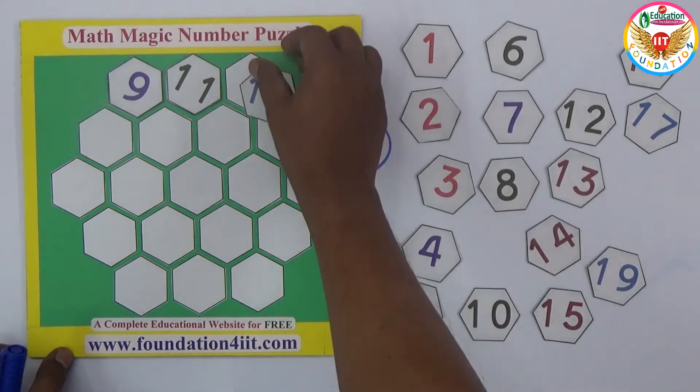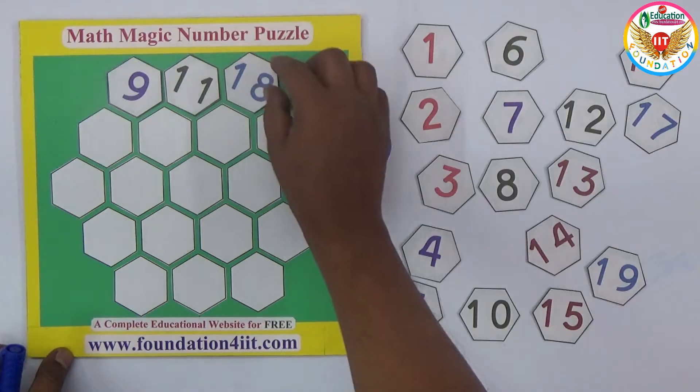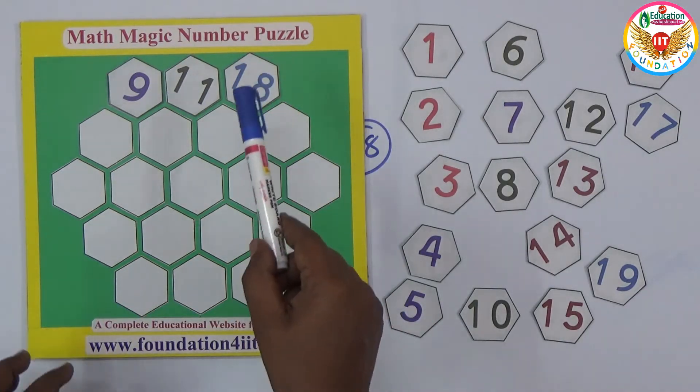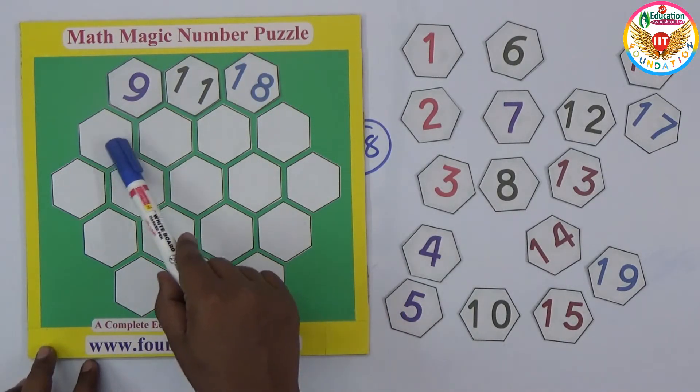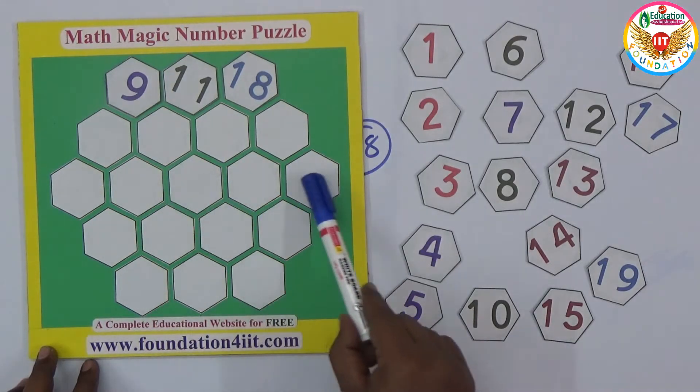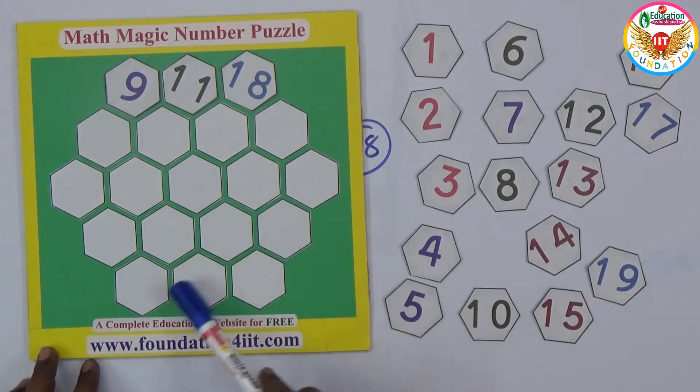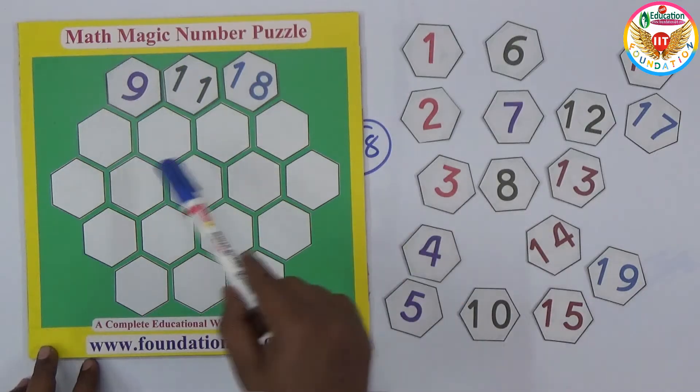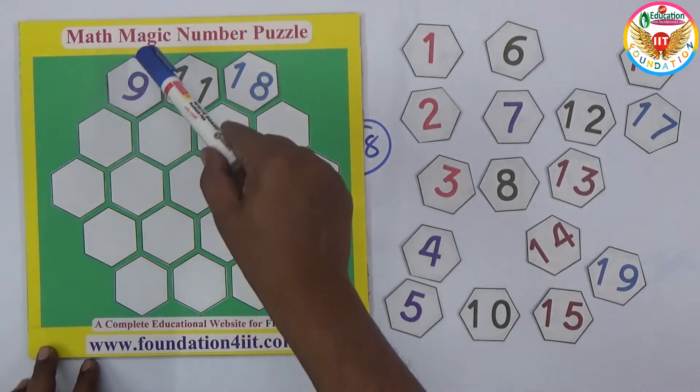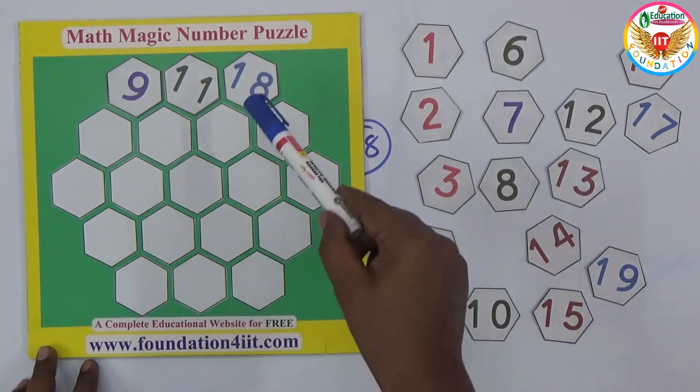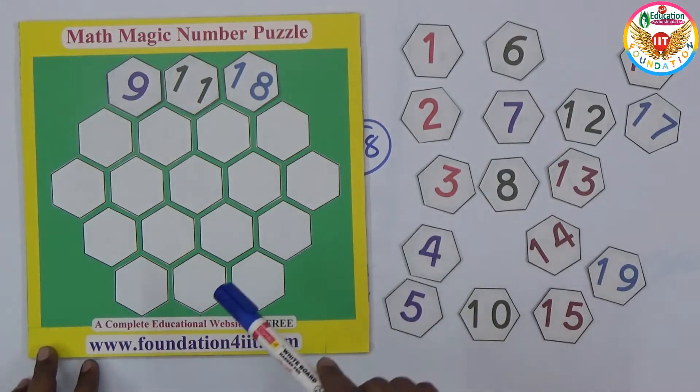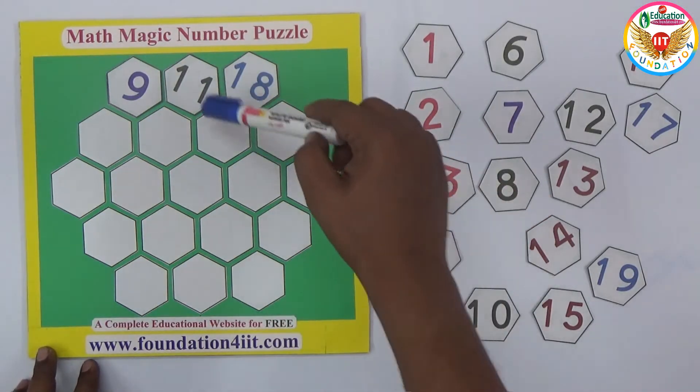Now these three numbers, these four numbers, all should equal 38. Next five numbers if I add should be 38. Similarly, not only straight lines but even diagonal type, these three and next four, five. Similarly this side also.